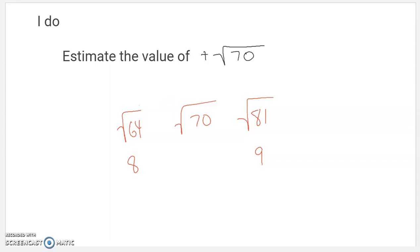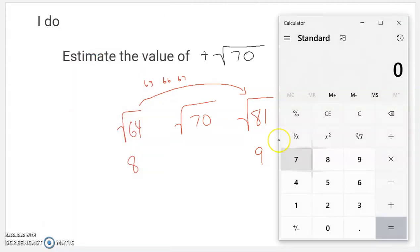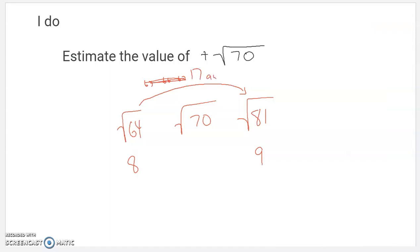To get from 64 to 81, if you imagine like how many are in between, there's 65 and 66 and 67 and 68. To get from 64 up to 81, how far apart are those? 81 minus 64. Those are 17 away from each other, right? So I could 64 plus 17 will get me to 81. So 17 away. Out of those 17 to get all the way from square root of 64 to square root of 81, square root of 70 is 6 out of those 17 of the way there. So here's what I would do.